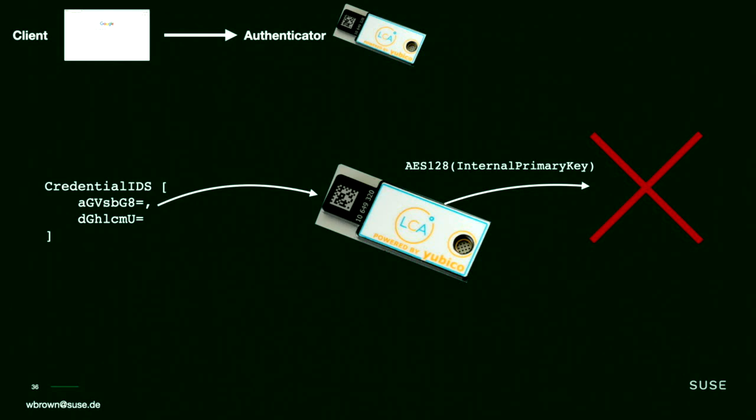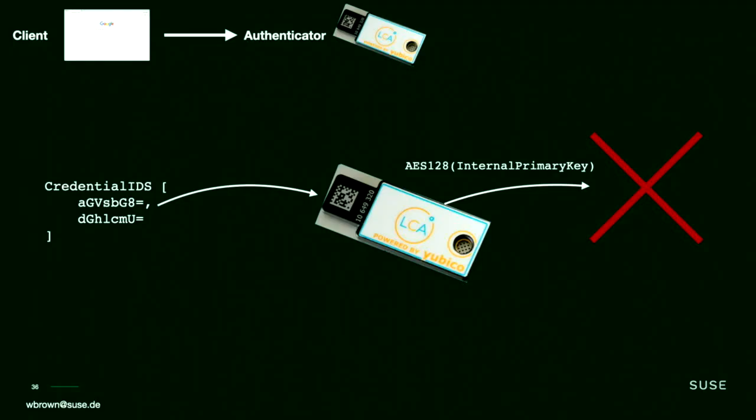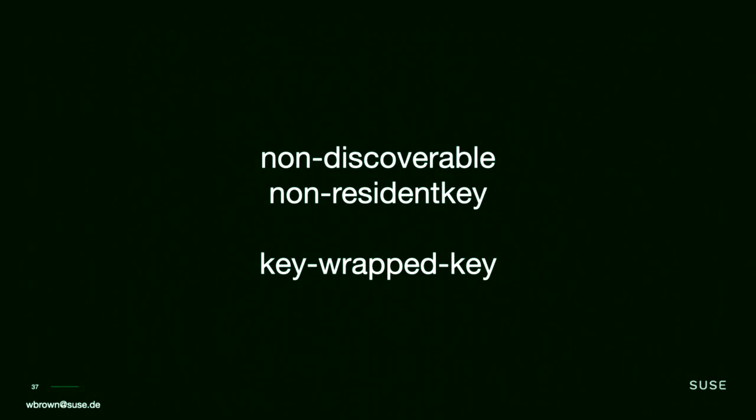If you happen to have a different YubiKey — not the one that created those blobs — and you try to decrypt them, the blob will fail to decrypt and fail its HMAC, and the private key will not be accessible. Is this less secure because you're exposing credential IDs when someone prompts for a username? No. These are encrypted with AES-128 and HMAC. If someone is able to decrypt these, we have very significant problems with cryptography on the internet as a whole. This style of key is called a non-discoverable, non-resident, or key-wrapped key.